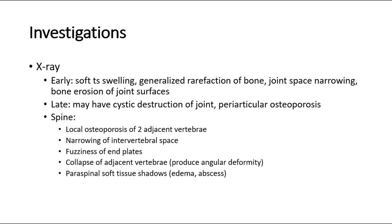In the late stage, there may be cystic destruction of the joint, and periarticular osteoporosis is also a significant finding. For TB spine, the expected findings on X-ray would be local osteoporosis of the two adjacent vertebrae, narrowing of the intervertebral space, fuzziness of the end plates, collapse of adjacent vertebrae, and paraspinal soft tissue shadows which could suggest edema or abscess formation.